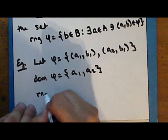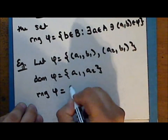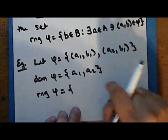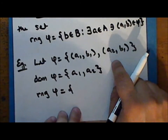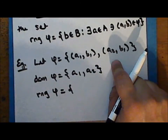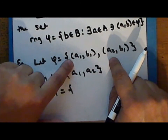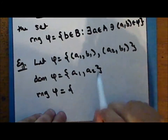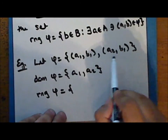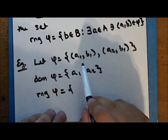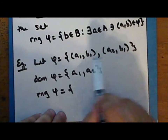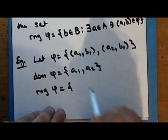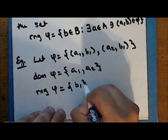The range of the function, denoted rng(φ), is the set of all elements b in the second set for which there exists an element a in the first set such that the ordered pair (a, b) is in the function. In terms of ordered pairs, we look at the set of all second coordinates. In this case, there is only one such element, which is b₁.